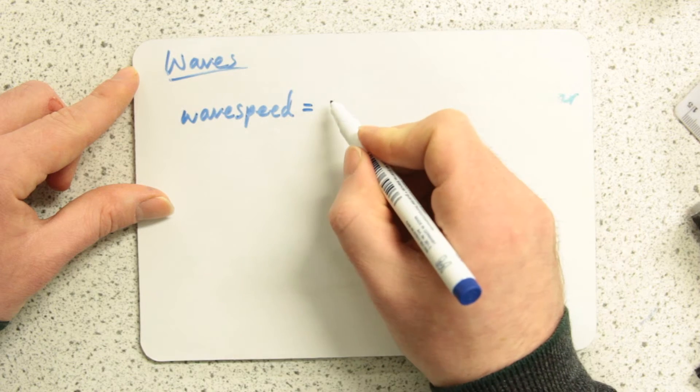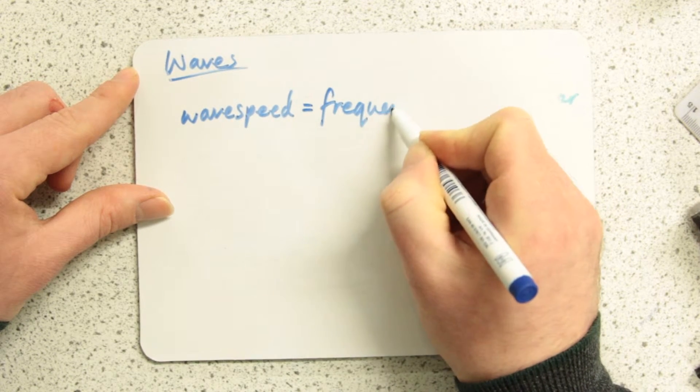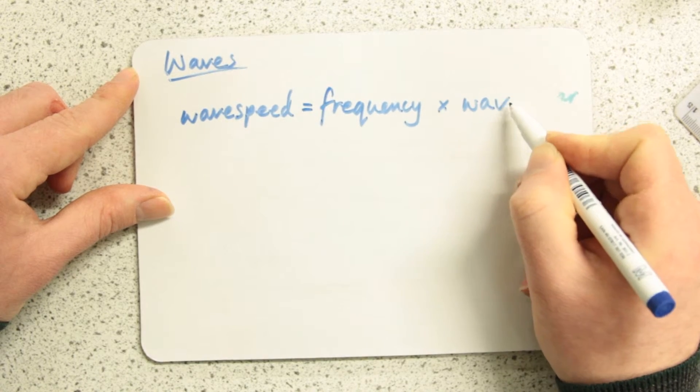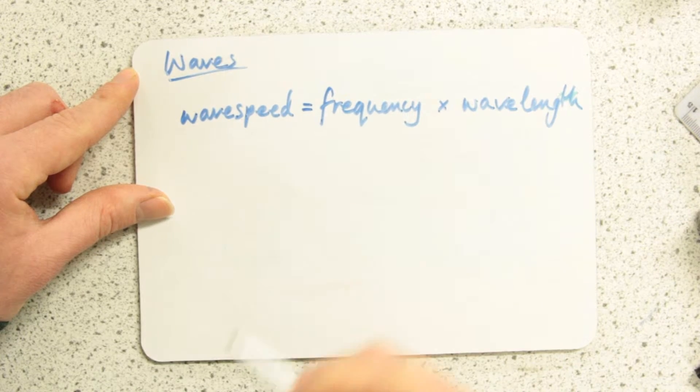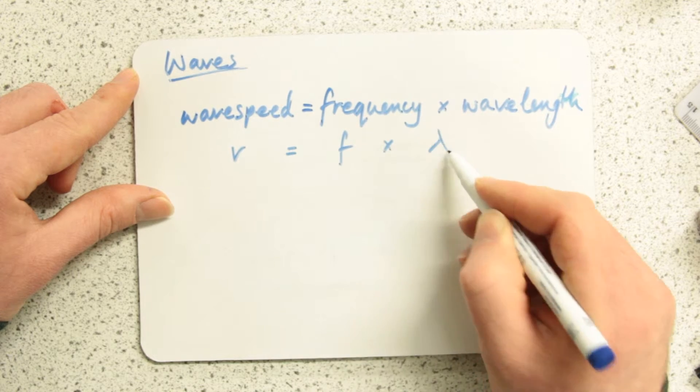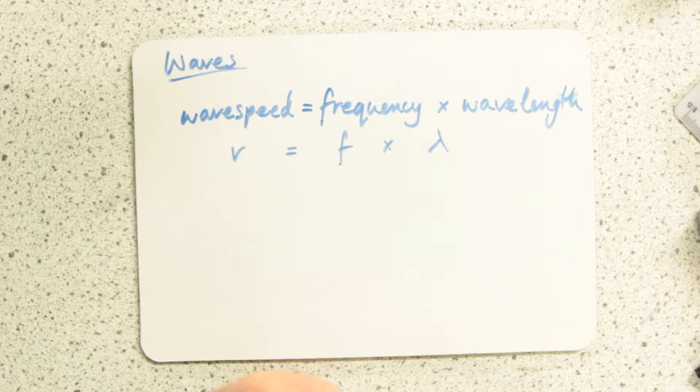In the wave speed equation, wave speed equals frequency multiplied by wavelength. We can write this in algebra: V is F times lambda. That funny upside down Y is a Greek letter lambda.